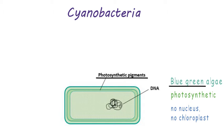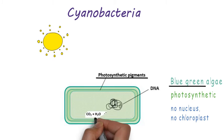Using these photosynthetic pigments, they harness sunlight and convert carbon dioxide and water to produce sugars and oxygen.